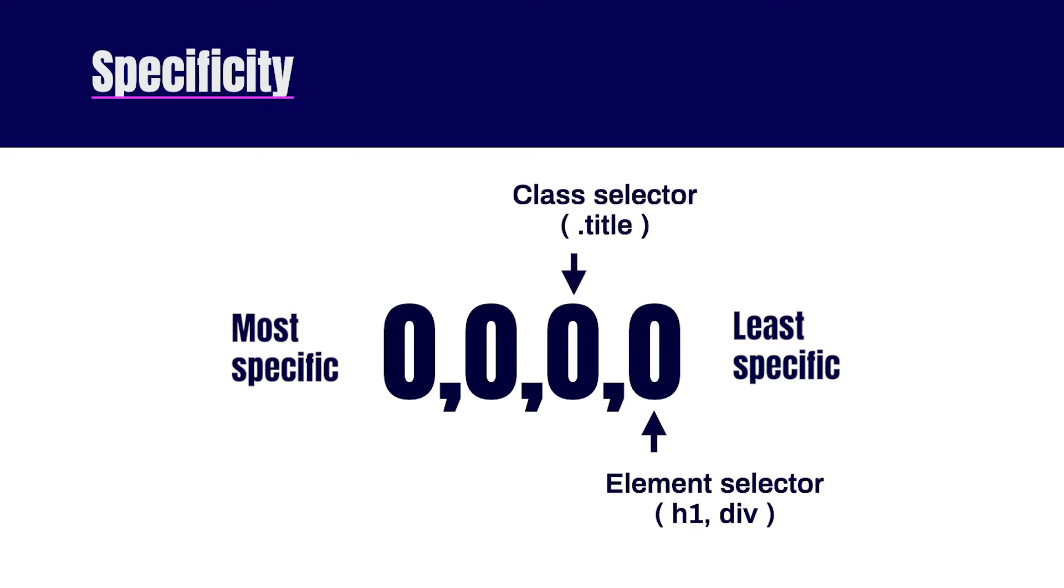Next, we have class selectors. So class equals title. After that, we have ID selectors. So ID equals avatar. And on the left most, we have inline styles. So style equals color purple.